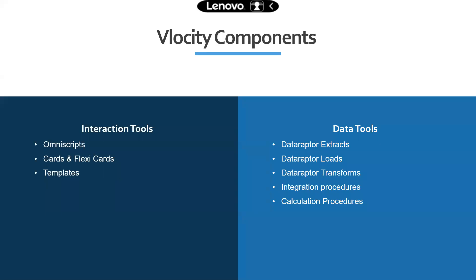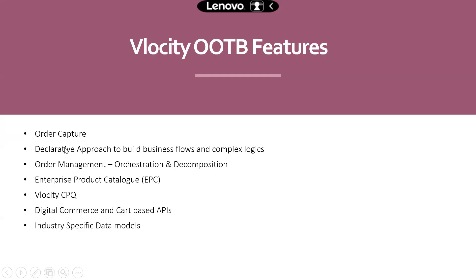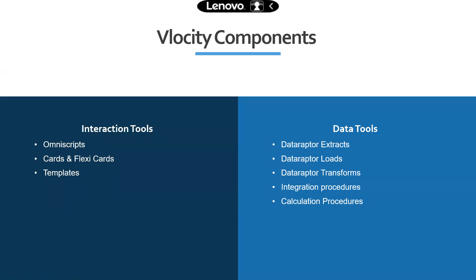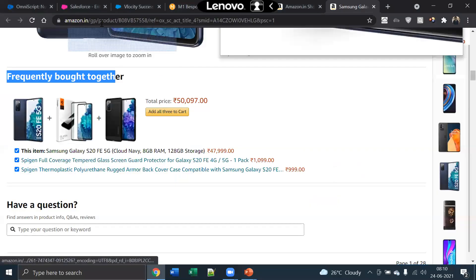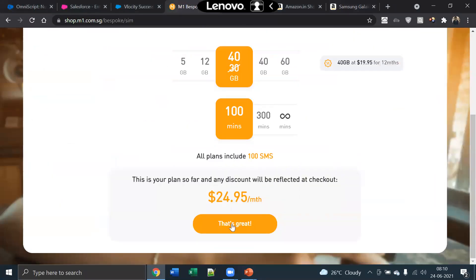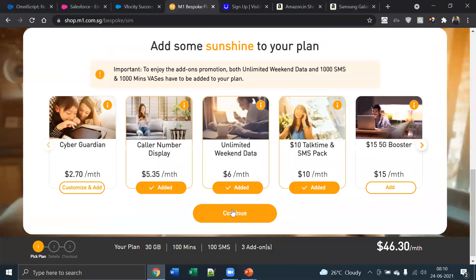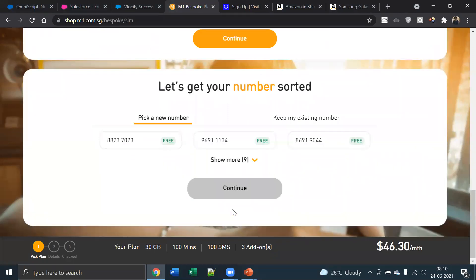Now we'll see about Velocity components. When we spoke about this declarative approach to build both front-end and back-end logic, these are the components provided by Velocity: two sets — Interaction Tools and Data Tools. Let's talk about Interaction Tools. The first is OmniScript. This entire screen — all of these multiple screens you are seeing — it's all built on OmniScripts. This whole web application is built on OmniScripts, all using only simple configuration.